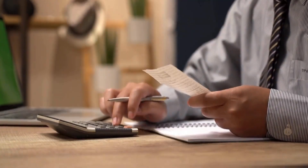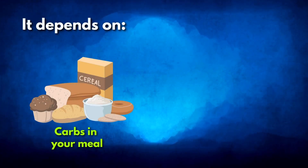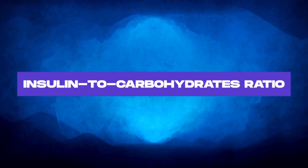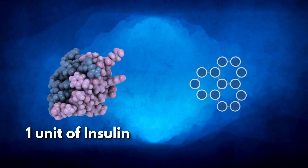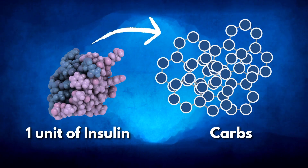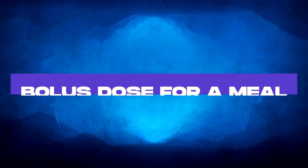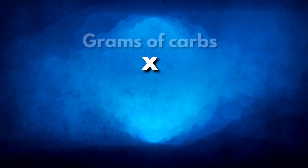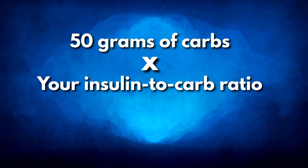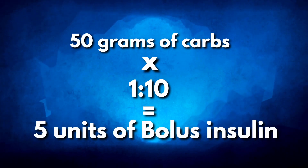Bolus insulin dose. Next, you need to calculate your bolus, or fast-acting insulin dose. This can be a bit tricky since it depends on the amount of carbohydrates in your meal and your individual insulin-to-carb ratio. The insulin-to-carbohydrate ratio, or ICR, is essentially how many grams of carbs are covered by one unit of insulin. To calculate your bolus dose for a meal, you multiply the grams of carbs in your meal by your insulin-to-carb ratio. For instance, if you eat a meal with 50 grams of carbs and your ratio is 1 to 10, you will need 5 units of bolus insulin for this meal.